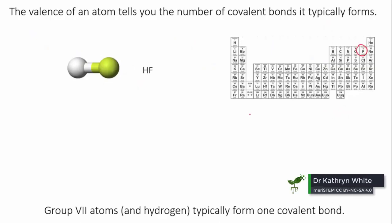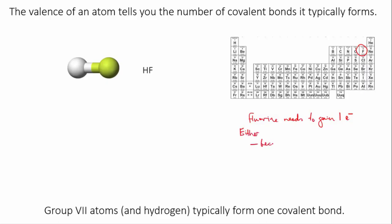So let's go back to hydrogen fluoride. Fluorine has a valence of minus 1. Being in group 7, it has 7 valence electrons, so it needs to gain 1 electron in order to complete its outer shell, which makes it energetically stable.